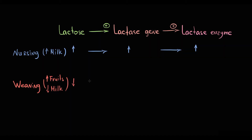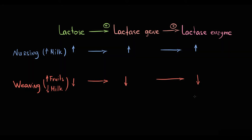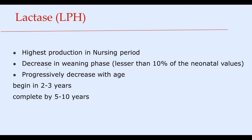With decreasing lactose, the expression of the lactase gene decreases, and thereby lactase production progressively decreases. It was estimated that lactase activity declines after the weaning phase to less than 10% of the neonatal values, and with age, lactase activity decreases even further.